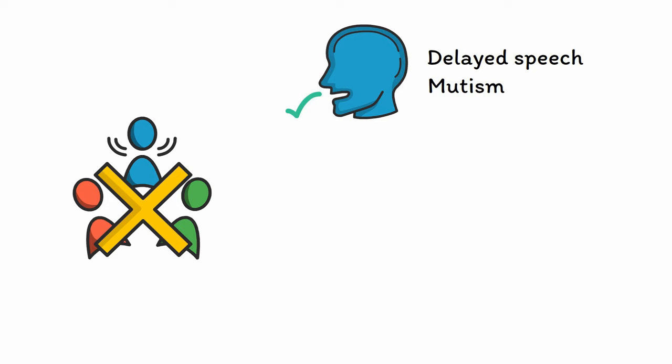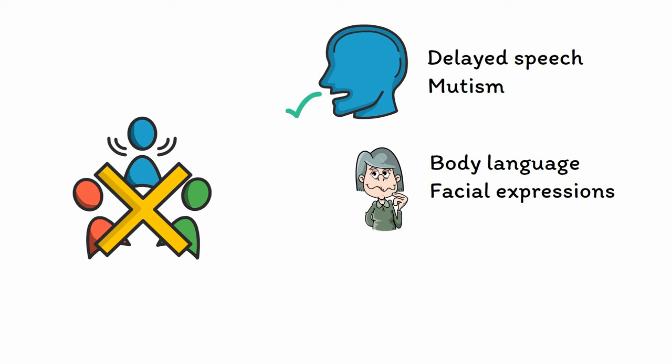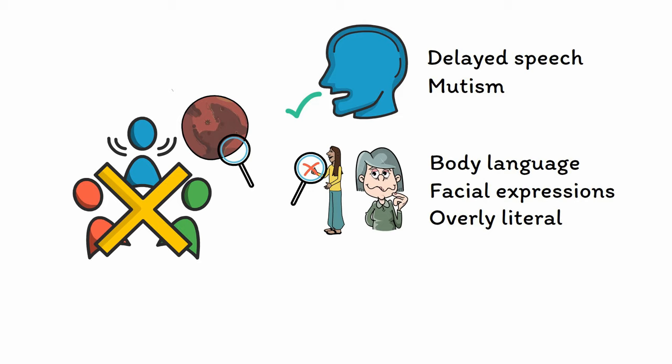Many people with autism struggle with both understanding and using nonverbal communication, such as body language and facial expressions. For example, most people understand that when someone points at something, you should look at the object they are pointing at, rather than looking at the finger itself. In contrast, someone with autism is more likely to miss the intended meaning of the gesture and instead look at the pointing finger. When speaking, people with autism are often overly literal and have difficulty understanding things like sarcasm that rely heavily on nonverbal aspects of communication, like the context of the situation and the speaker's vocal intonation.